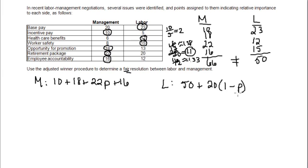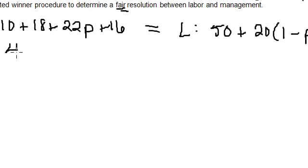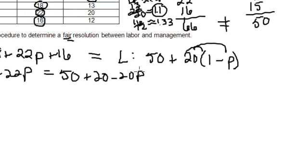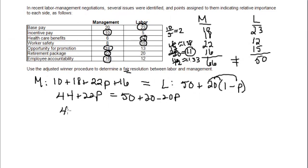Okay, so again, if I want this to be a fair resolution, these need to be equal to each other. So then at this point, we're just going to be solving for P, and this is solving a linear equation. So on the left side, let's add everything that we can together, which is 10, 18, and 16, which gives us 44. On the right side, we can go ahead and distribute that 20. Still solving for P. Let's clean up the right side a little bit more to be 70 minus 20P.